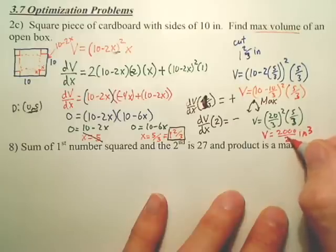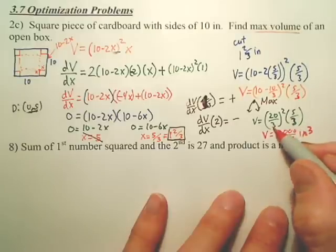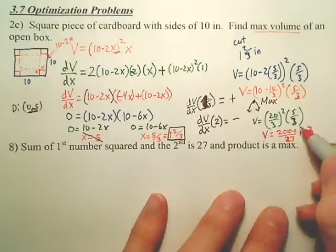Thank you. Over 27. 3 squared is 9. 9 times 3 is 27.